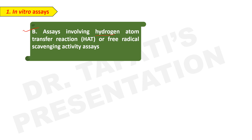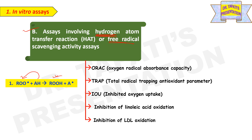The second category of in vitro assays involves hydrogen atom transfer (HAT) reactions, also called free radical scavenging activity assays. In most cases, hydrogen from the antioxidant is transferred to a radical compound, and the radical is converted to a non-radical compound. Examples are ORAC (oxygen radical absorbance capacity), TRAP (total radical trapping antioxidant parameter), inhibition of linoleic acid oxidation, and inhibition of LDL oxidation.